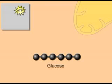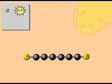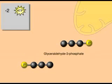In the energy investment phase, some ATP energy is used to start the process of glucose oxidation. By the end of this phase, a six-carbon molecule, glucose, has been split into two three-carbon molecules of glyceraldehyde phosphate.